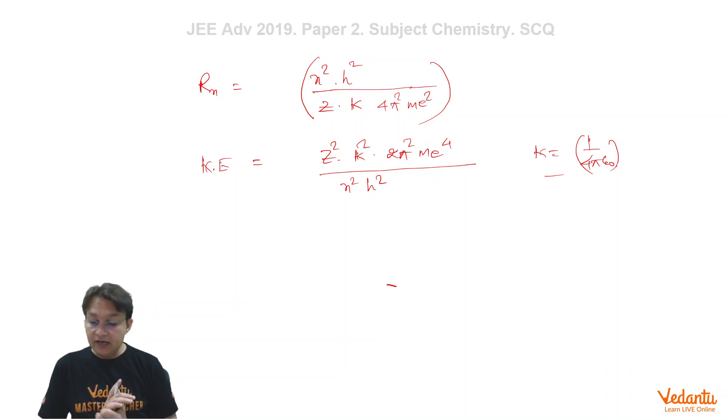Even if you don't know the full expression, if you simply know how they are related to the constant n square and Z, you can solve the problem.